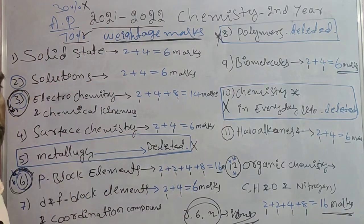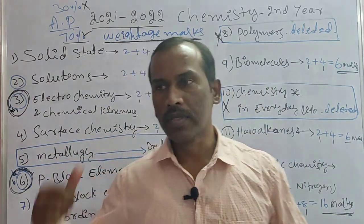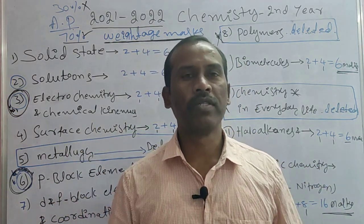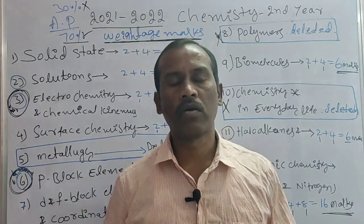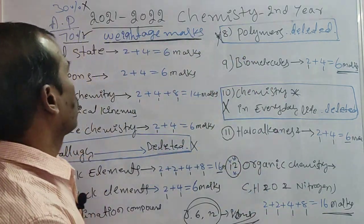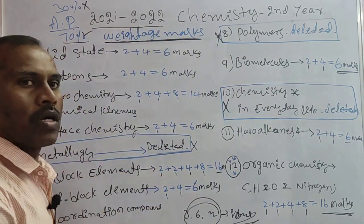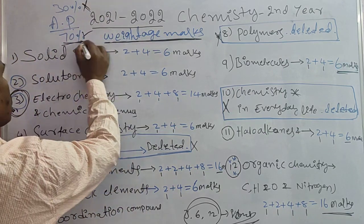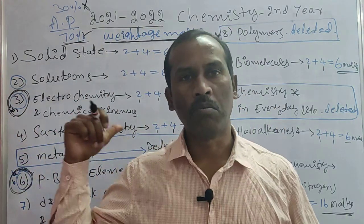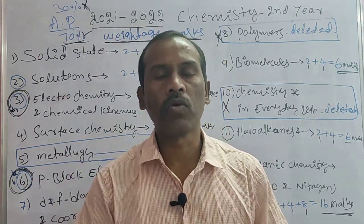This is the model paper with weightage marks for the subject of Chemistry, as per the AP government. According to the AP government, 30% of the syllabus is reduced and the remaining 70% is covered chapter-wise as per the model paper. Thank you, and all the best.